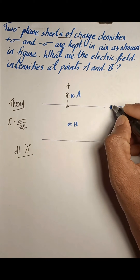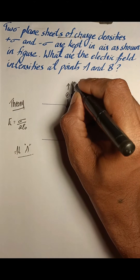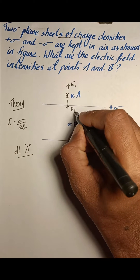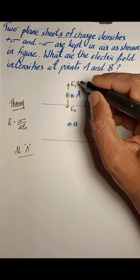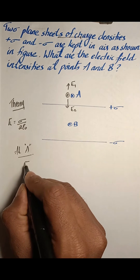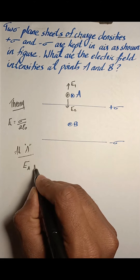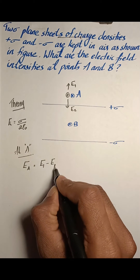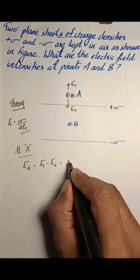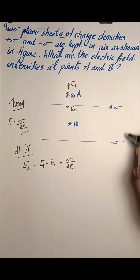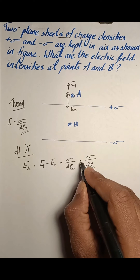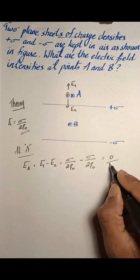Therefore, the electric field due to the positively charged sheet, E1, and the electric field due to the negatively charged sheet, E2, are in opposite directions. Since electric field intensities are vector quantities and they are oppositely directed, we find the difference. The net electric field at A is E1 minus E2. Both equal sigma by two epsilon zero, so their difference is zero. The net electric field at A is zero.